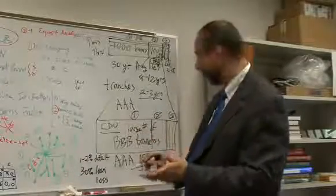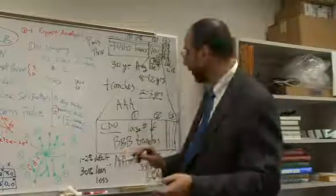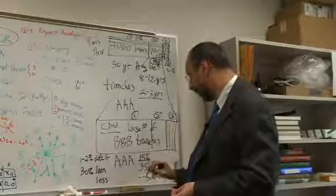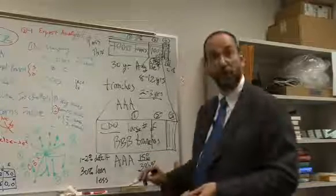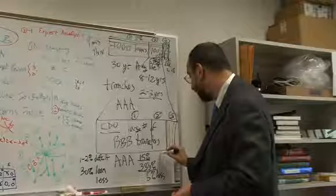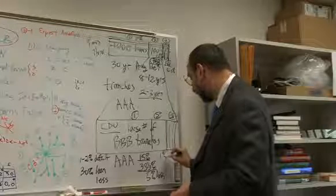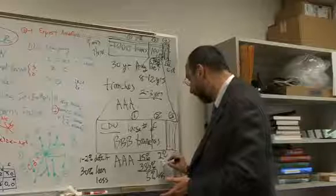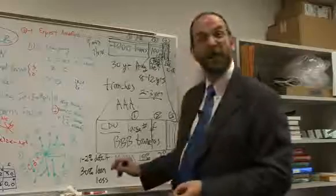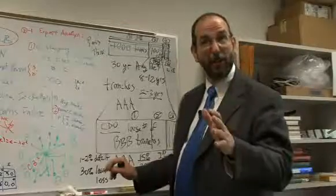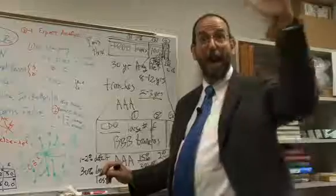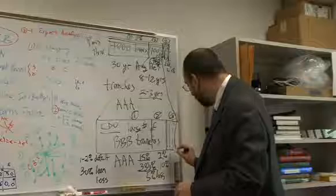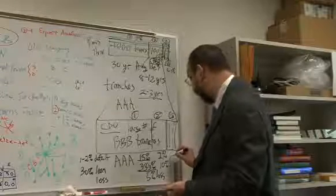The problem is, and what made subprime mortgages so popular, is that initially, they did not experience 15 percent defaults and 33 and a third percent loan losses. What they actually experienced was actually about one percent or two percent defaults, and they experienced loan losses of about ten percent, which means instead of losing five percent, which was the expectation, and that's why they charged subprime borrowers a higher interest rate to compensate them for this expected five percent loss, they actually only experienced losses of about 0.2 percent.